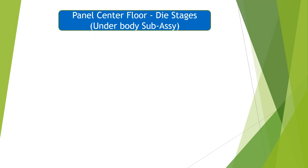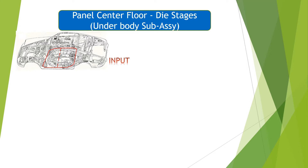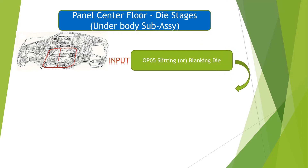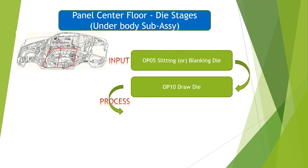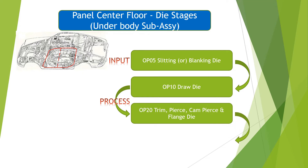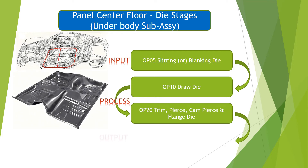Let's take an example of how die stages come into picture using center floor panel manufacturing at underbody assembly in a car. The input comes in the form of slitting — a rectangle blank — or a blanking die, called operation 05. We also get cut-to-length blanks through the slitting process. In operation 10 we have a draw die, and in operation 20 we have trim, pierce, cam pierce, and flange die. Once these two processes are completed, we get the output panel.